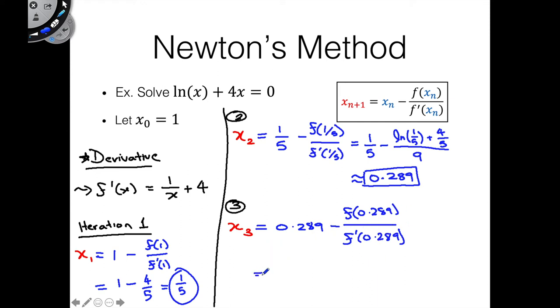And if we were to flesh this out a little bit more, we get 0.289, minus, we'd have the ln(0.289), minus 4(0.289) over 1/(0.289), plus 4.